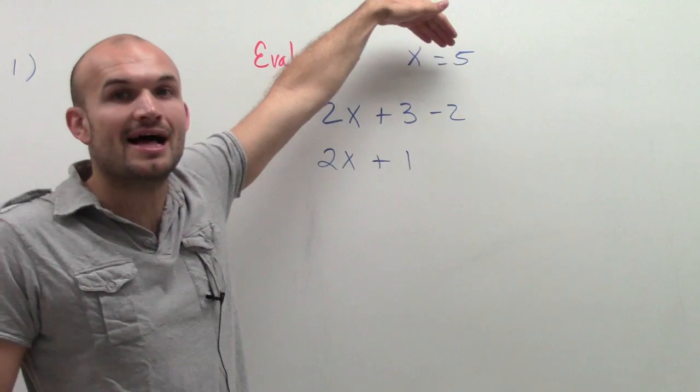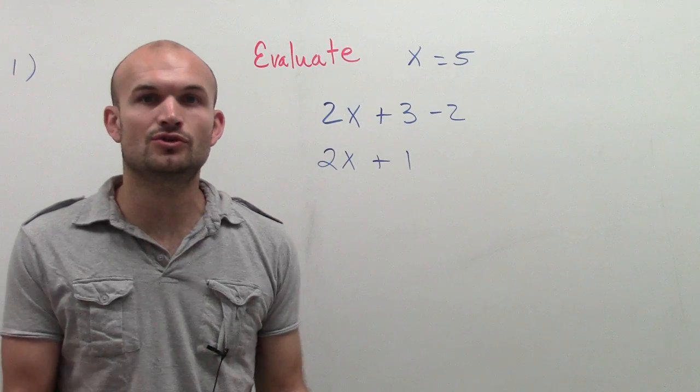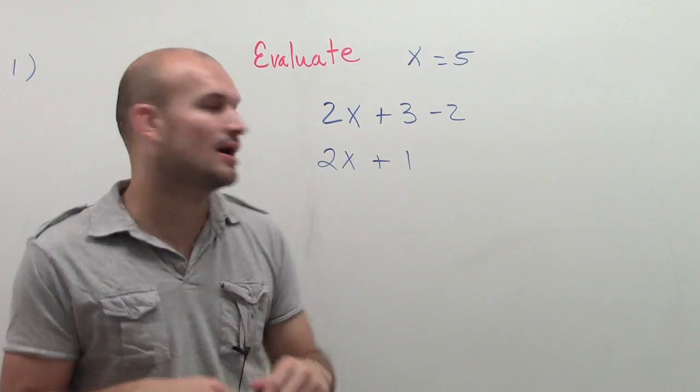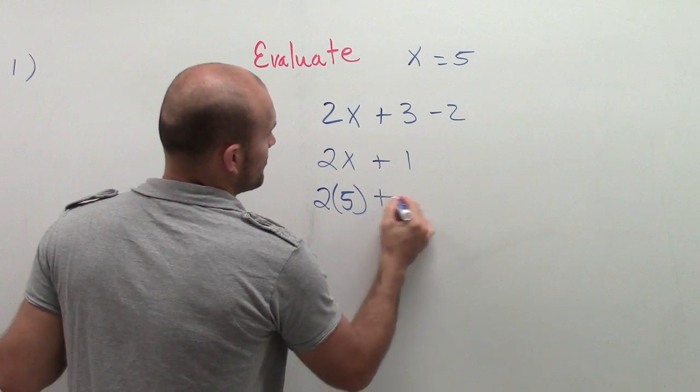Now we're saying that the value of that number, we want it to be 5. Therefore, I don't need to use the variable anymore. I can now just say 2 times 5 plus 1.